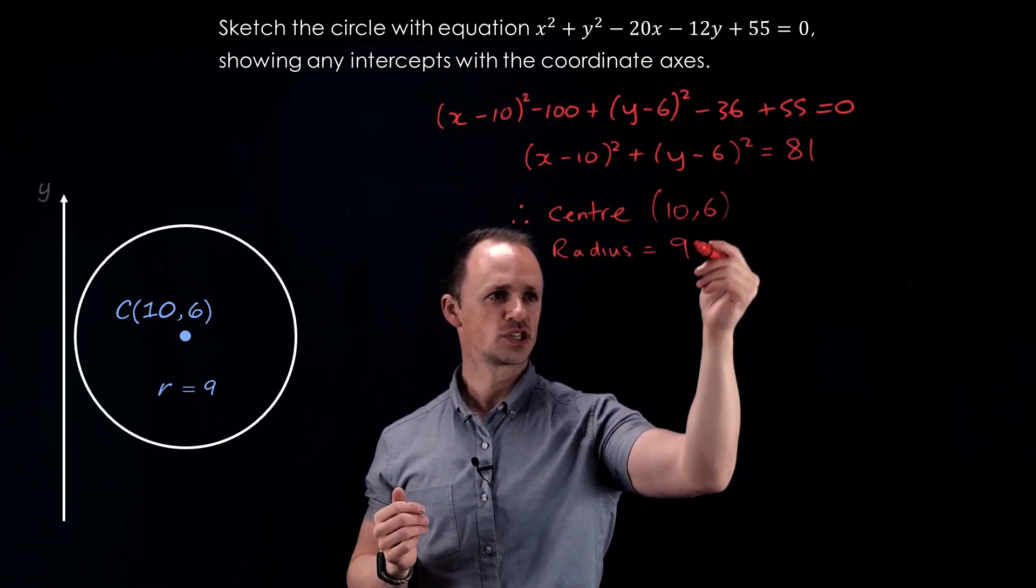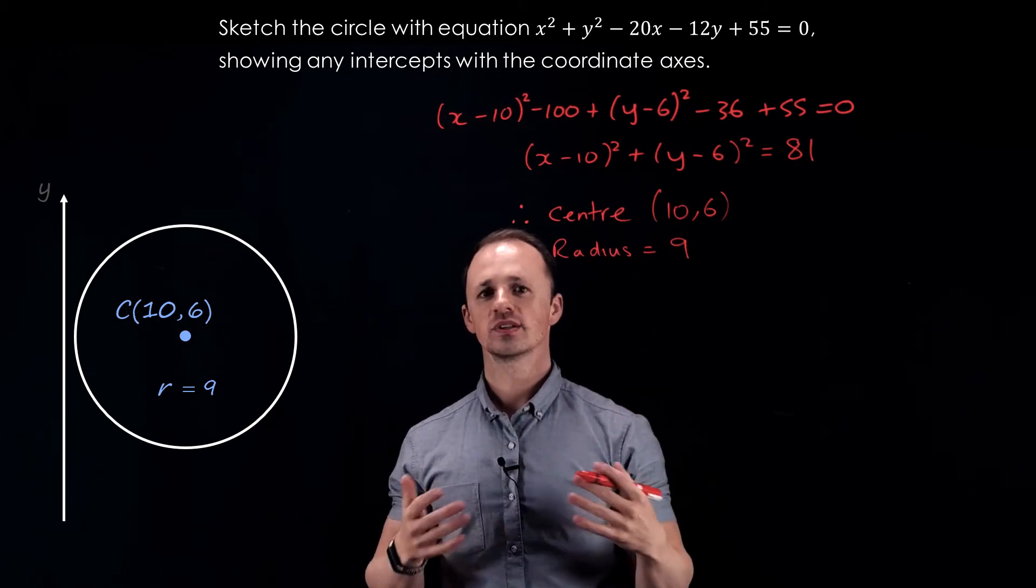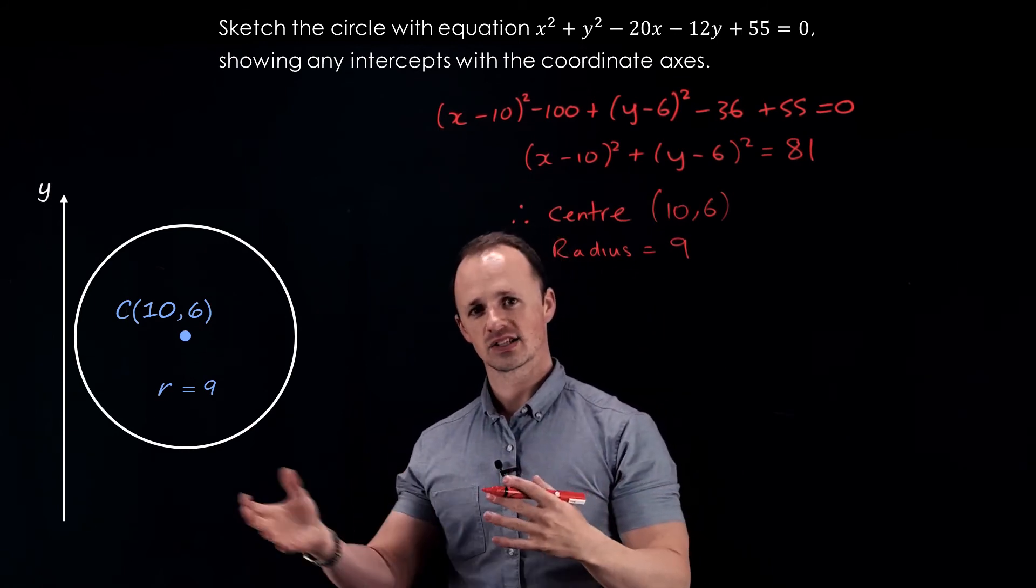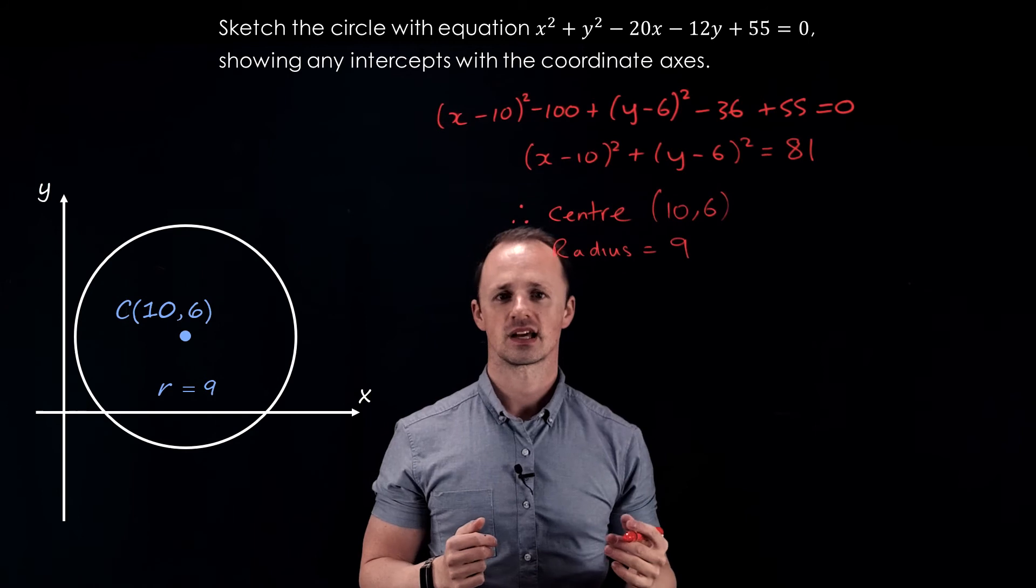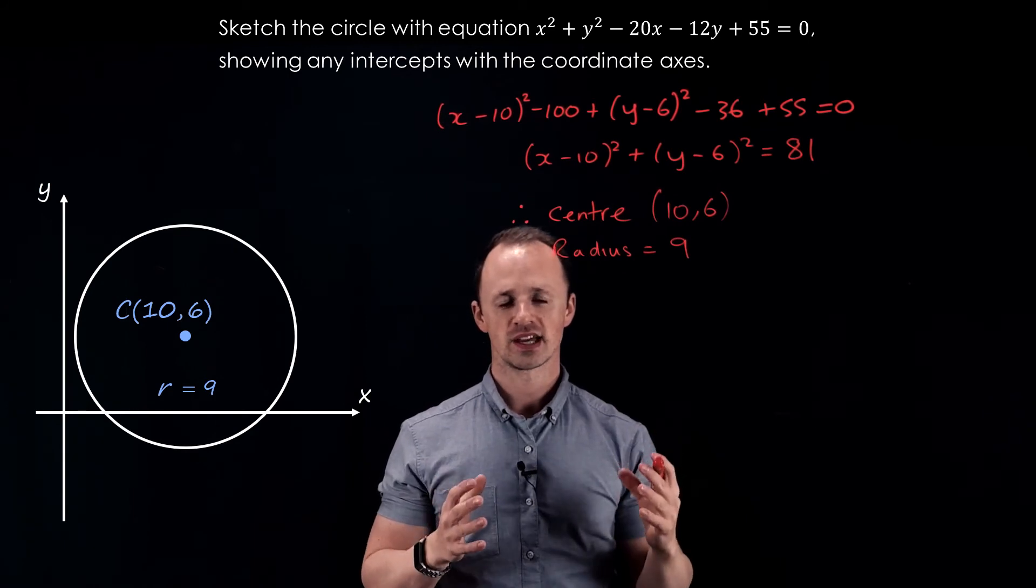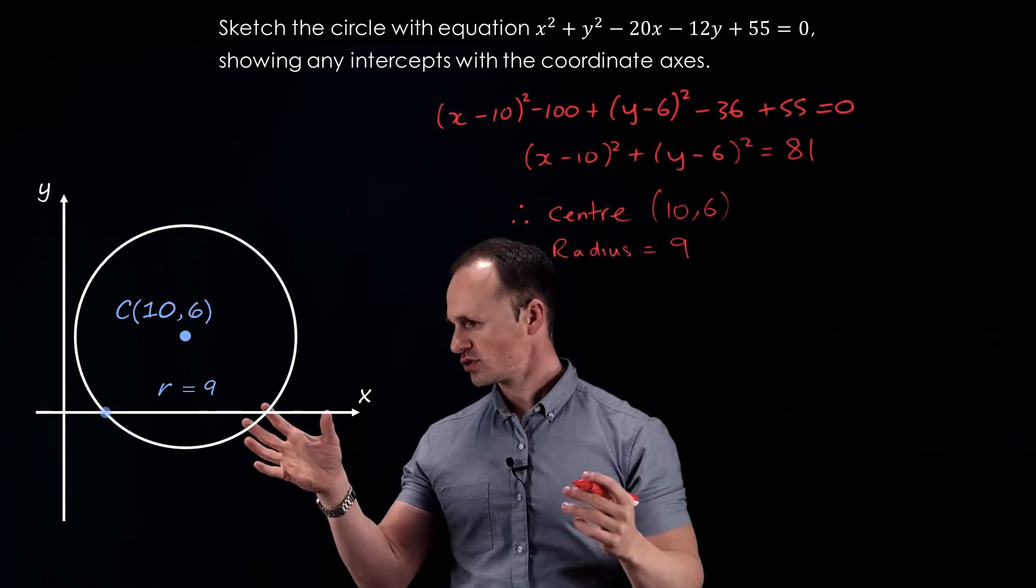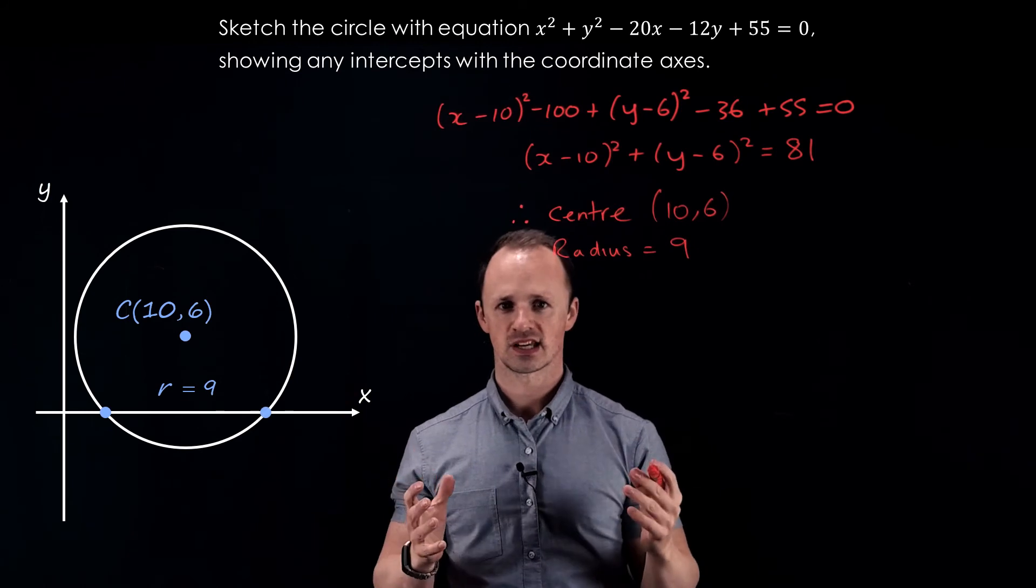If we start at the y coordinate of 6 and move down by 9, we'd get to minus 3, which is telling us that we are going to cross the x-axis. So in this case, we need to find out those two points where it crosses the x-axis.